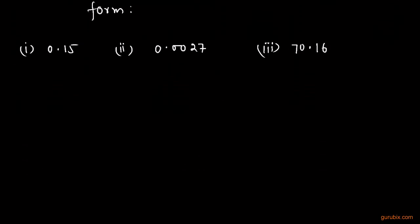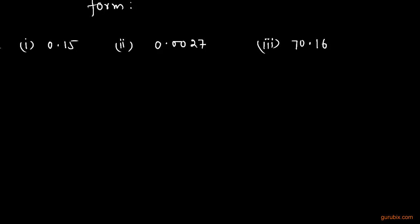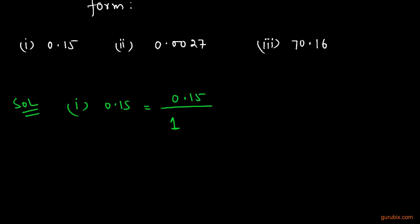We shall start converting with part 1 of this example, which is 0.15. To convert this decimal number into P by Q form, first we shall write this decimal number in the numerator and 1 in the denominator. Now we shall put as many zeros on the right side of this 1 as the number of digits in the decimal part. We count 1 and 2, so we write 2 zeros with this 1 and remove the decimal point.